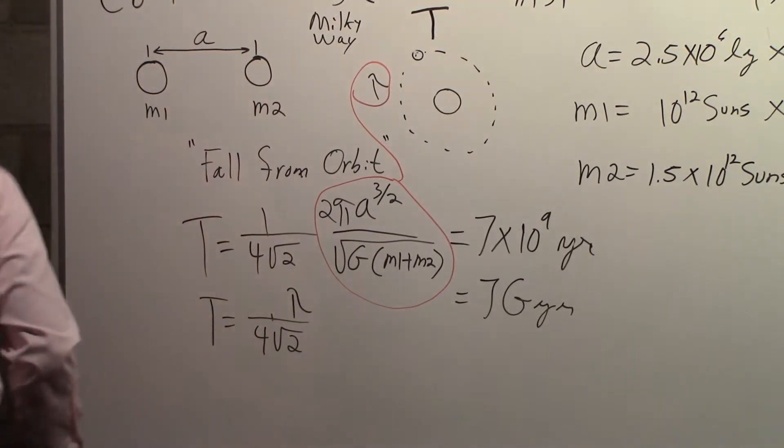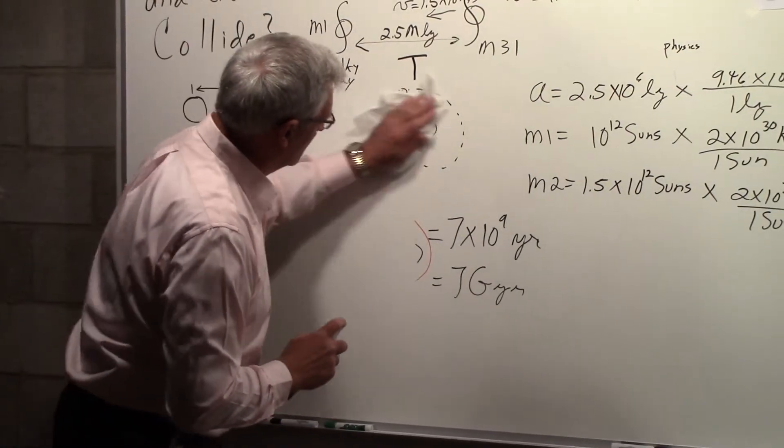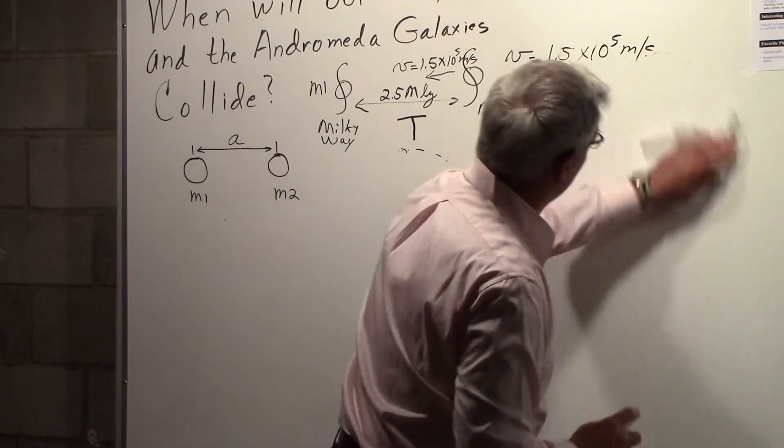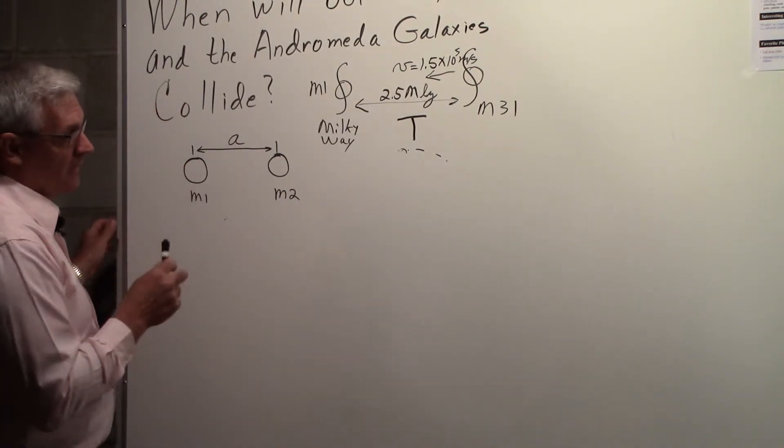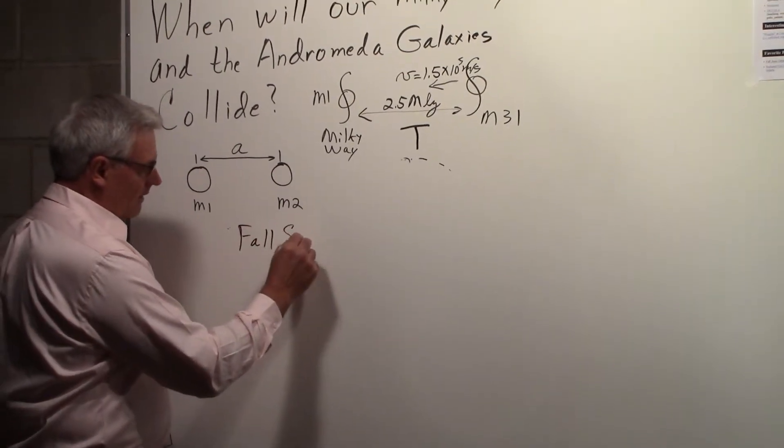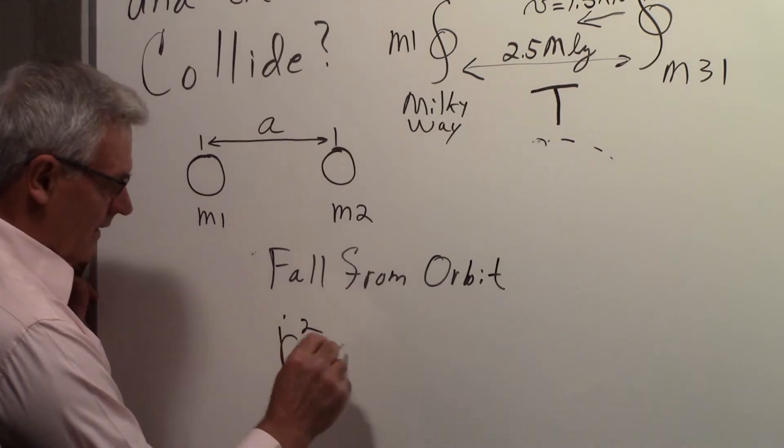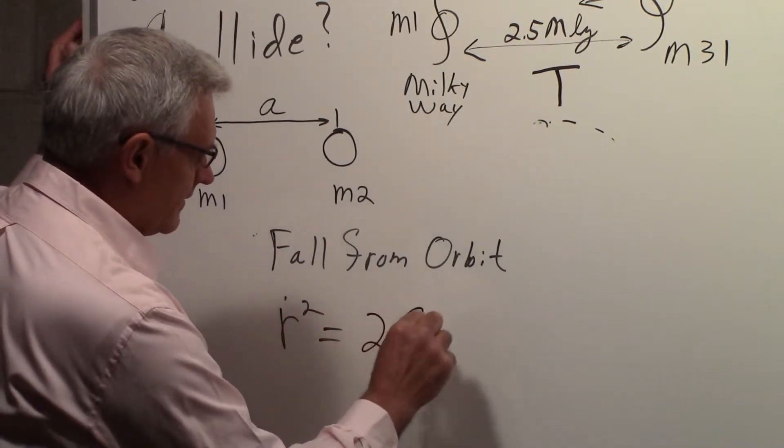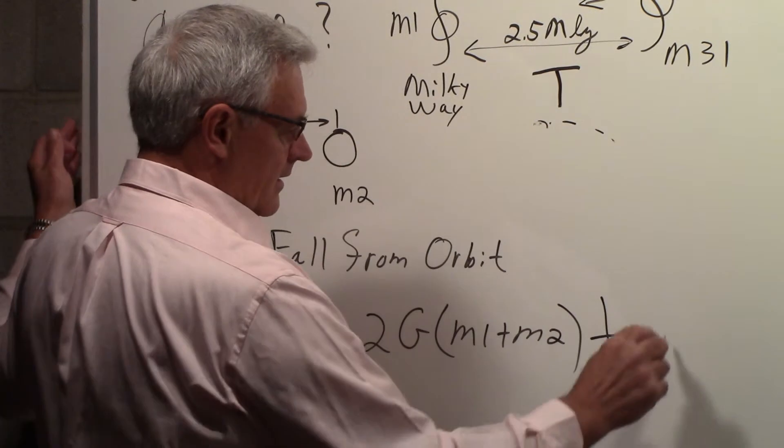So the question is, how do we correct that? The way to do that is if you go back to that text I told you about, fall from orbit, you'll see there is an expression: R dot squared. This is what's integrated to get that expression for T. R dot squared, R dot is the velocity.